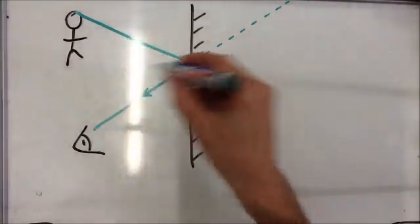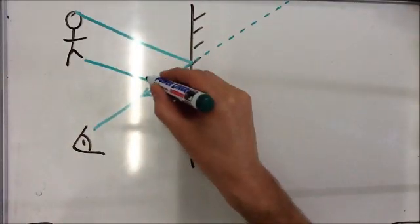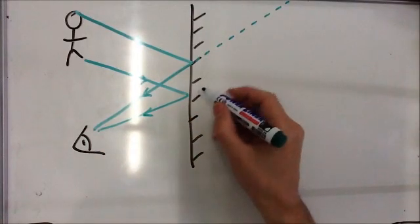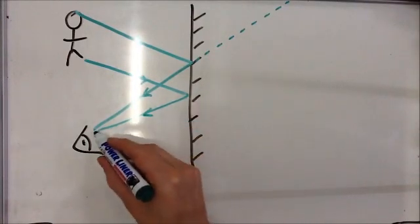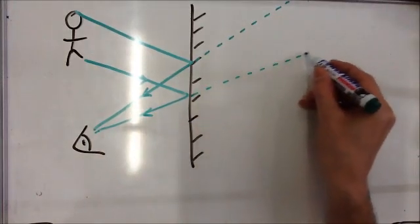Now, the light from the person's feet does exactly the same thing. It hits the mirror and it reflects back into our eyes as well, so we can see the whole person, the bottom of the object as well. And again, our brain can't deal with the fact that this light has changed direction, so we imagine that this light came from out here.